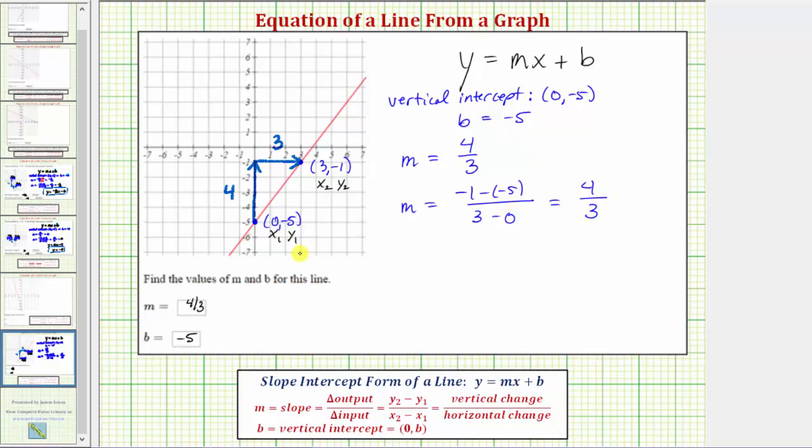So now to find the equation, which this question doesn't actually ask for, we would substitute negative five for b and four-thirds for m. So the equation of the line in slope-intercept form is y equals four-thirds x, and instead of writing plus negative five, it's more common to write just minus five. I hope you found this helpful.